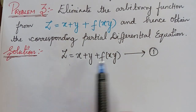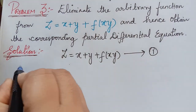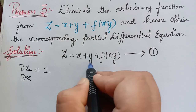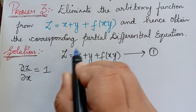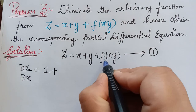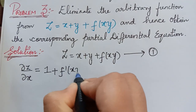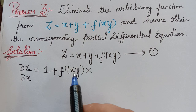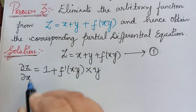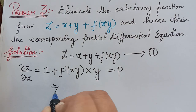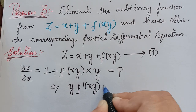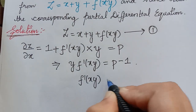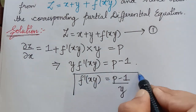We have to differentiate equation 1 partially with respect to x. We obtain dou z by dou x equal to the differentiation of x is 1, plus the differentiation of y is 0 since y is treated as constant, plus f dash of xy multiplied with y by applying the chain rule, since y is treated as constant and the differentiation of x is 1. Equating to p, we obtain y multiplied with f dash of xy equal to p minus 1. Therefore f dash of xy equal to p minus 1 divided by y. Let us mark this as equation 2.